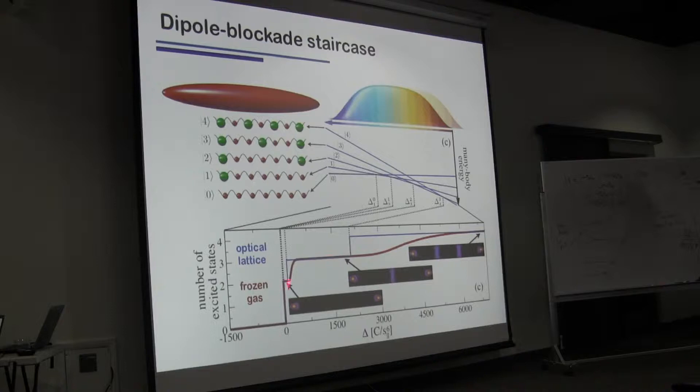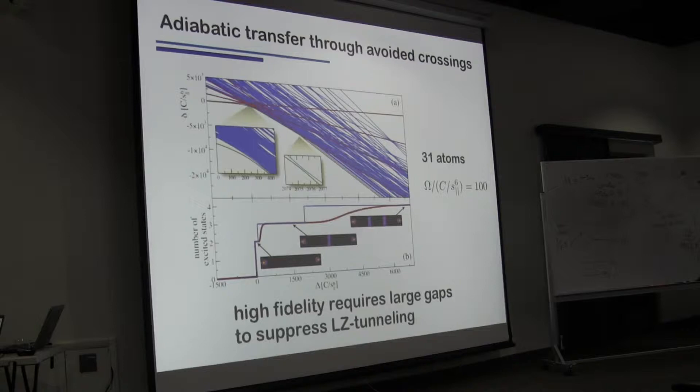Next, at the time we adopted this dipole blockade or Rydberg blockade staircase, which ideally you could climb up just by changing your laser detuning in a slow fashion. And what means slow here? Slow actually means that you don't want to excite this massive spaghetti up here. So this is now a diagonalization of this whole N-body system, a linear chain of 30 atoms.